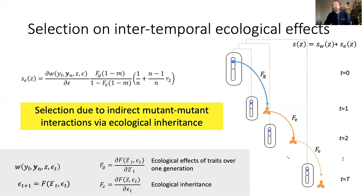Taking a step back, this part of the selection gradient captures selection due to indirect mutant-mutant interactions via ecological inheritance, suggesting that selection will take into account the effect that mutants have on one another across generations when they remain preferentially in the same patch.